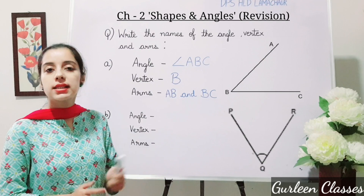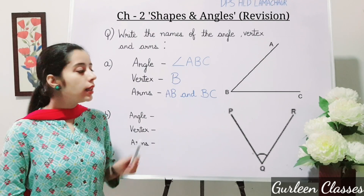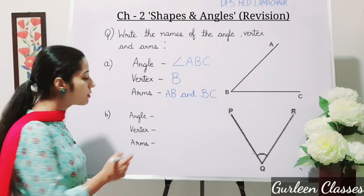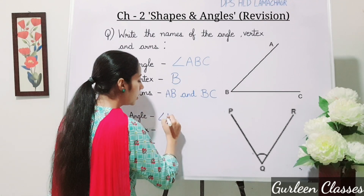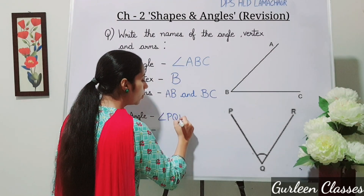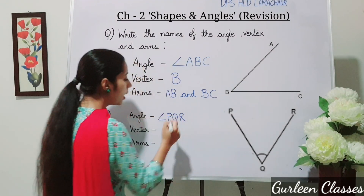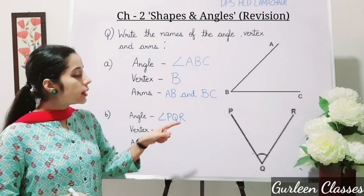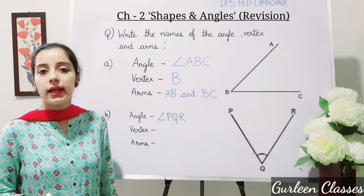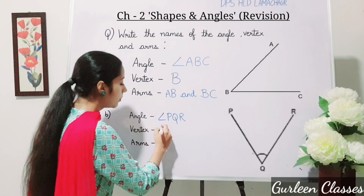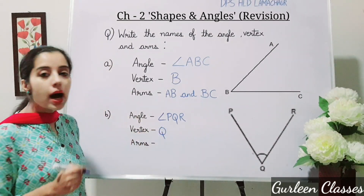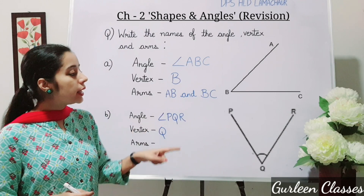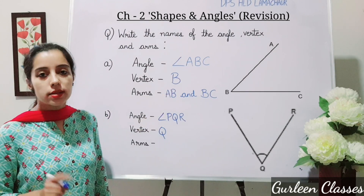Now, what is the angle in the next figure? The angle is PQR, so we write angle PQR. The vertex is always the middle letter of the angle, so the vertex is point Q. The arms are PQ and QR.